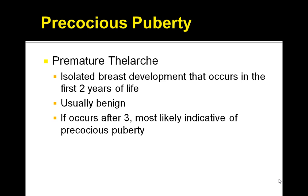For peripheral precocious puberty, if the LH response is negative, then you order an ultrasound of the ovaries and adrenals, and you also get an estradiol level. You want to evaluate the ovarian and adrenal glands for any cysts or tumors. Estradiol levels will be increased in ovarian cysts or tumors.